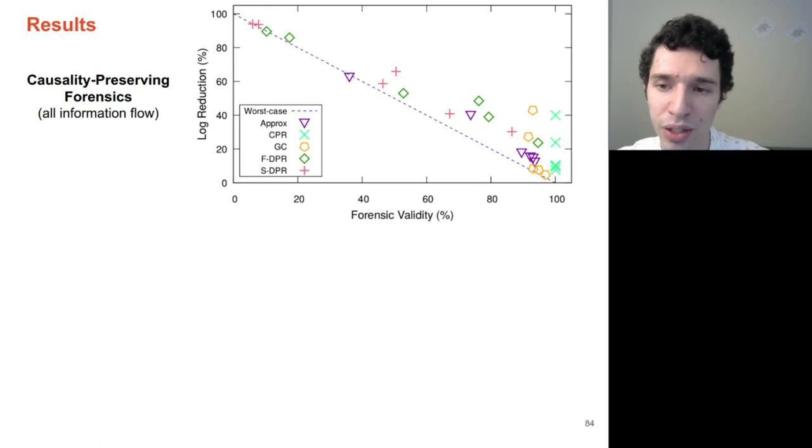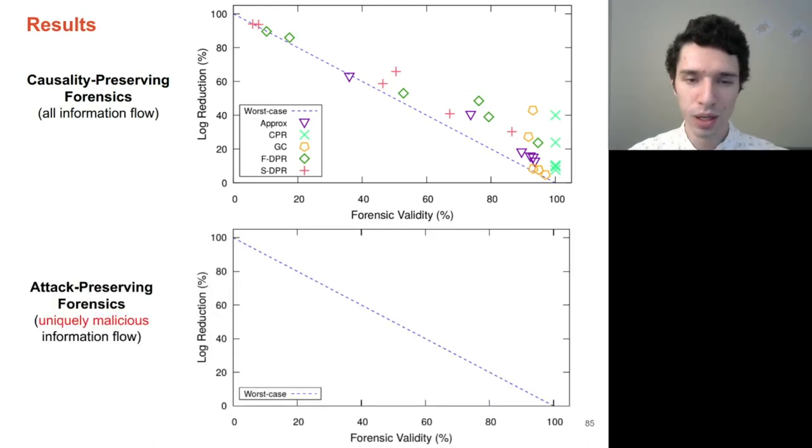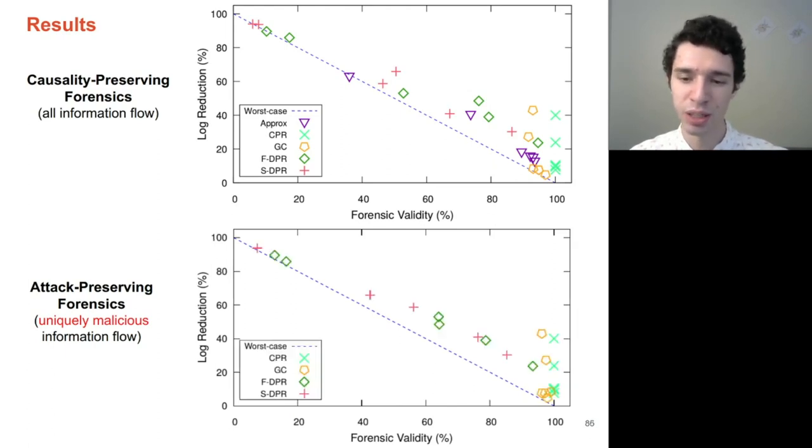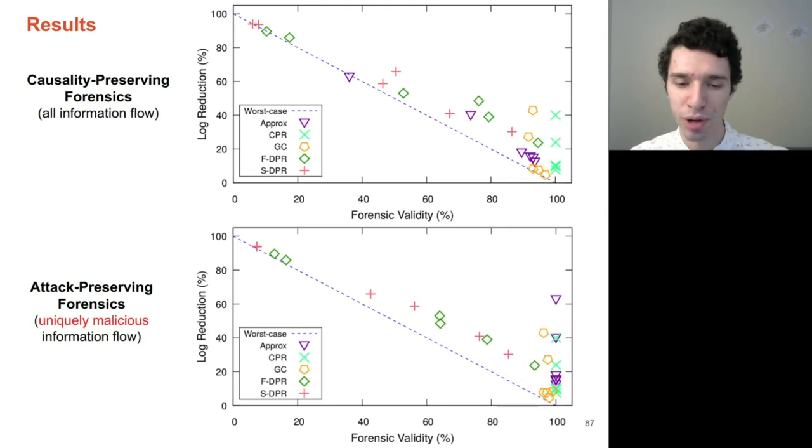However, the story changes when we begin to look at the attack-preserving forensics. Plotting prior work against the attack-preserving forensics, we see that all prior work generally experiences the same pattern as it did with the causality-preserving forensics. This seems to imply that all prior work does not focus on whether the information is malicious or benign. In contrast, LogApprox's focus on anomalous events specifically seems to tailor to these malicious entities that are within the system. And because of this, it's able to achieve 100 percent forensic validity while also achieving a reduction rate that's above both of the conservative reduction techniques of CPR and LogGC.